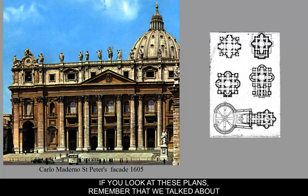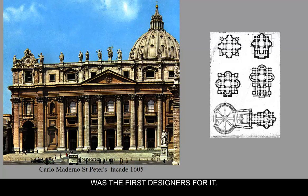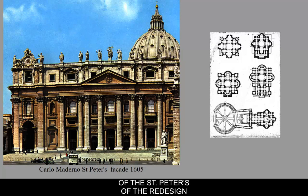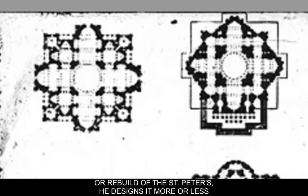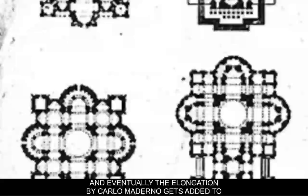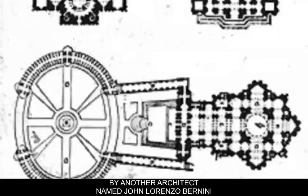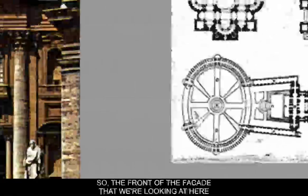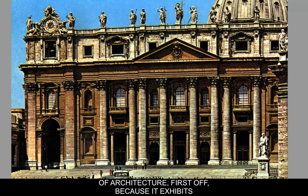Looking at these plans, Bramante and Michelangelo in the beginning of the 1500s were the first designers of the rebuild of St. Peter's. Bramante designs the first floor plan more or less as a symmetrical central plan, like a snowflake. Over time the facade gets elongated, and eventually Carlo Maderno's elongation gets added to by another architect, Gian Lorenzo Bernini. The front facade we're looking at here is a really good example of the Baroque style of architecture.